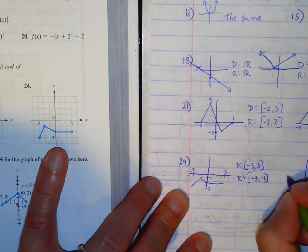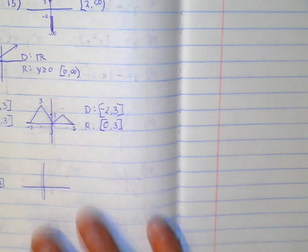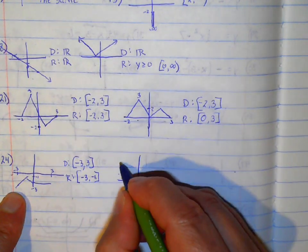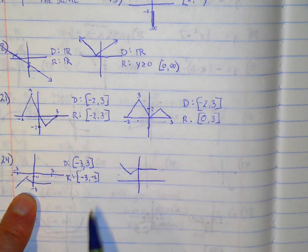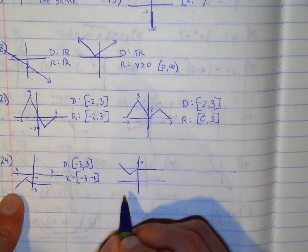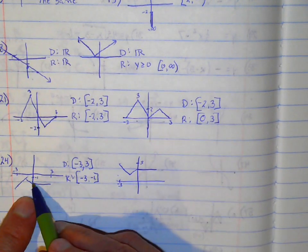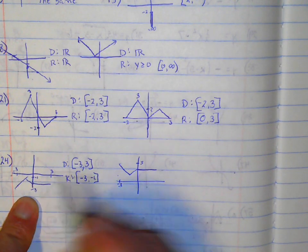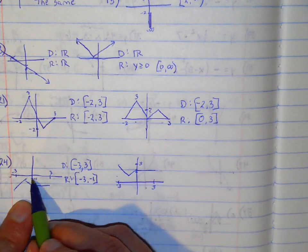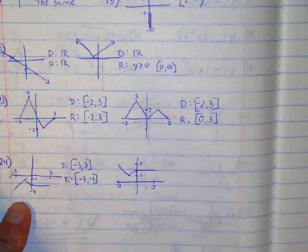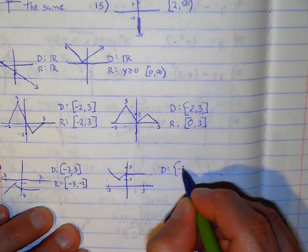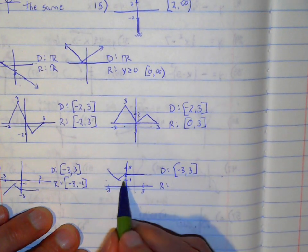Now the absolute value part. Anything that's negative — so if the output was at negative 3, it becomes positive 3. It basically reflects up to be positive. The bottom peak was at negative 1, so it'll be at positive 1. The domain goes from negative 3 to positive 3, and the range goes from 1 to 3.